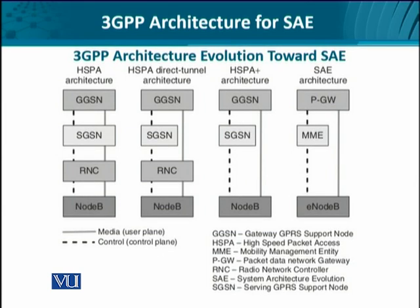Let's look at the architecture in different forms over time. On the leftmost side, we have the high-speed packet architecture, starting from the base station or Node B to the internet, including network elements such as the Serving GPRS Support Node and the Gateway GPRS Support Node. We have two dedicated overlays for control traffic and user traffic — this is the hierarchical architecture.